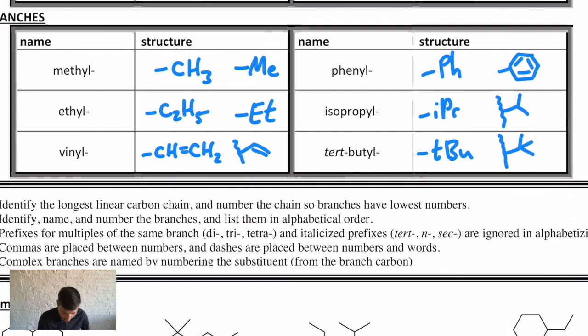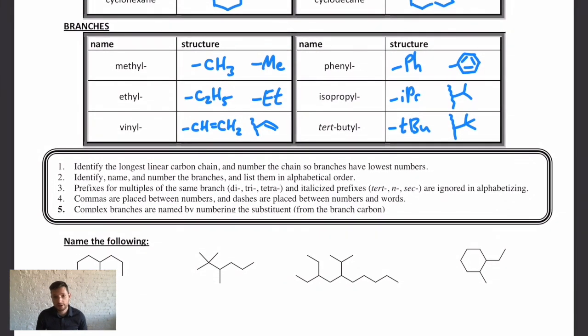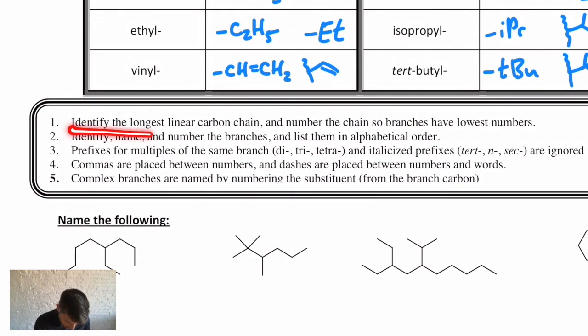And lastly, let's put this together and learn some systematic rules for how to name alkanes. Number one: you identify the longest carbon chain and you number the branches so you have branches on the lowest numbers. Identify, name, and number the branches, and then we list them alphabetically.